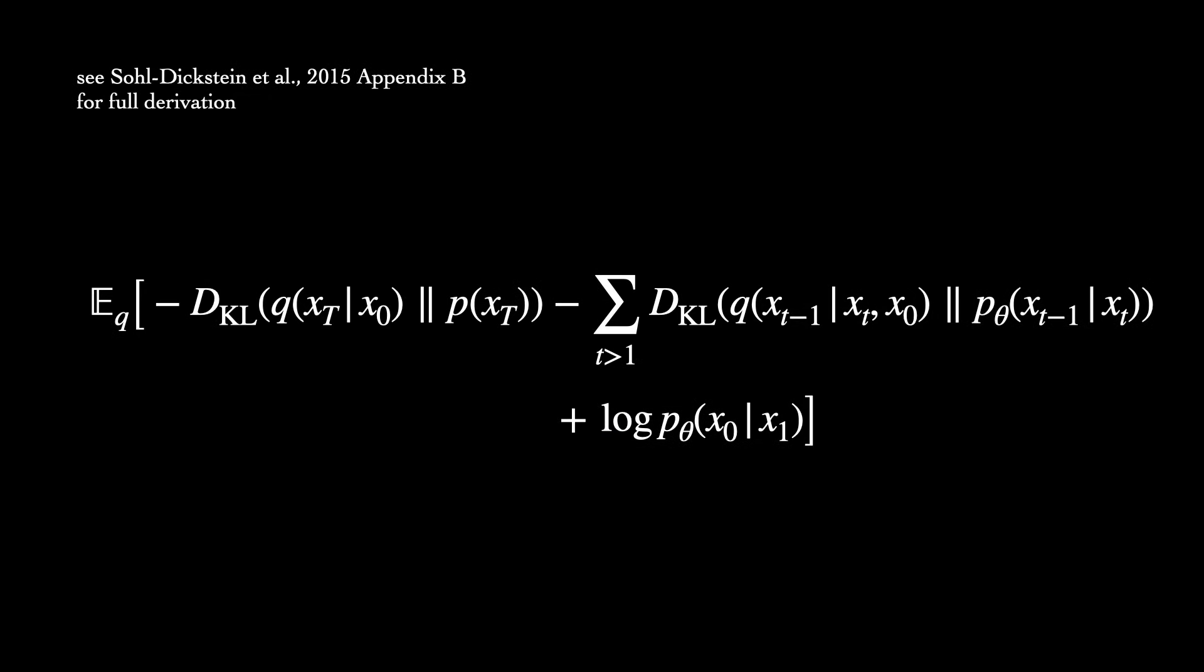Let's examine each component. P is fixed. It's just the start of the reverse process, the pure noise distribution. And as we saw earlier, the whole forward process q is also treated as fixed. So we just have to worry about these two terms to the right.